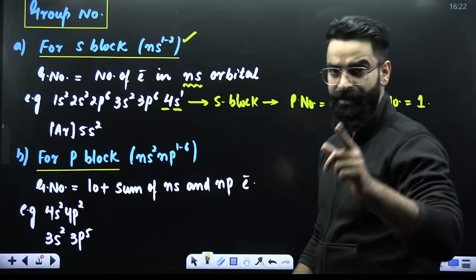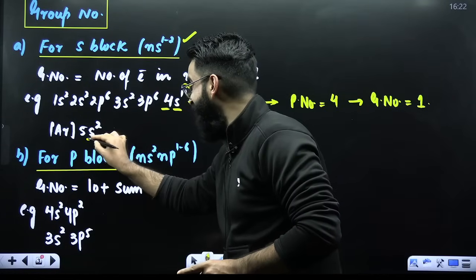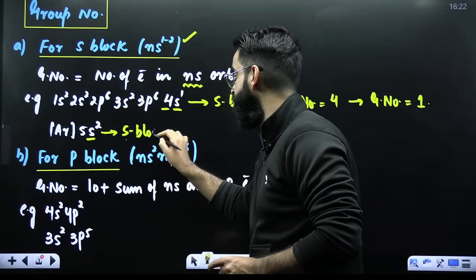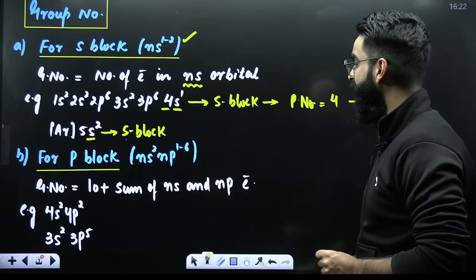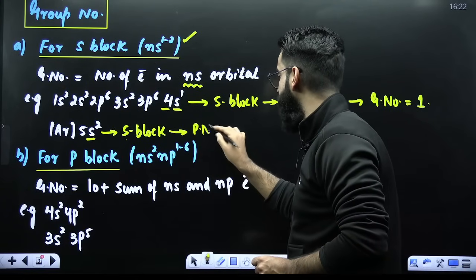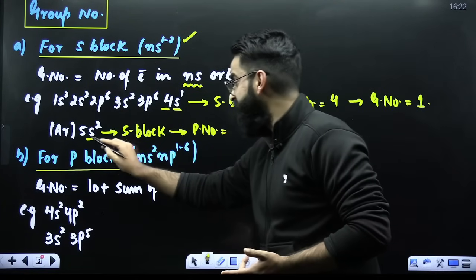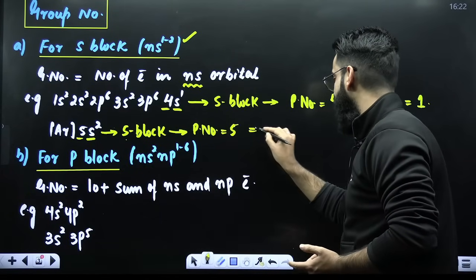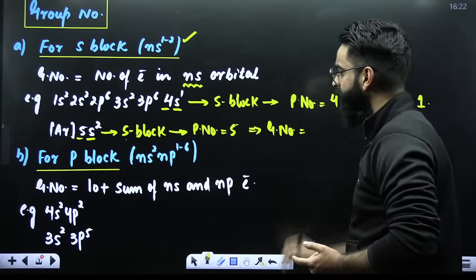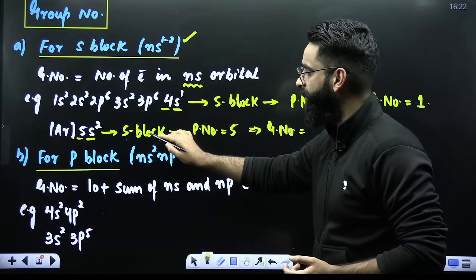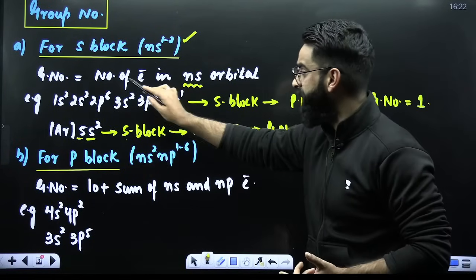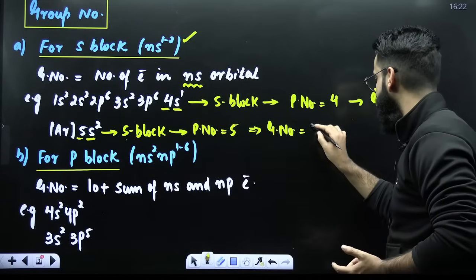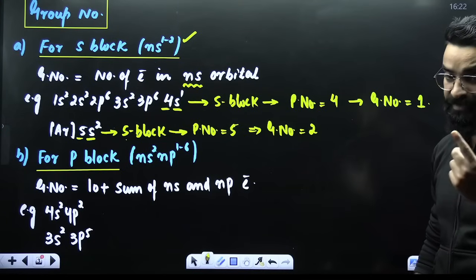Similarly, if you look at another configuration where the last electron has again entered into the S orbital — it is again an S block element. The highest value of principal quantum number is 5, so it belongs to the 5th period. Since it is an S block element, the group number equals the number of electrons in the NS orbital. If NS contains 2 electrons, it belongs to the second group.